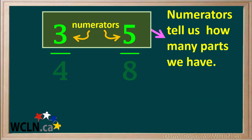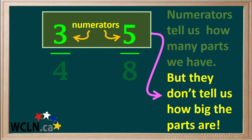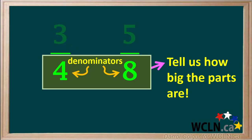The trouble is, numerators tell us how many parts we have, but they don't tell us how big each of the parts are. Remember, it's the denominators that tell us how big each of the parts are.